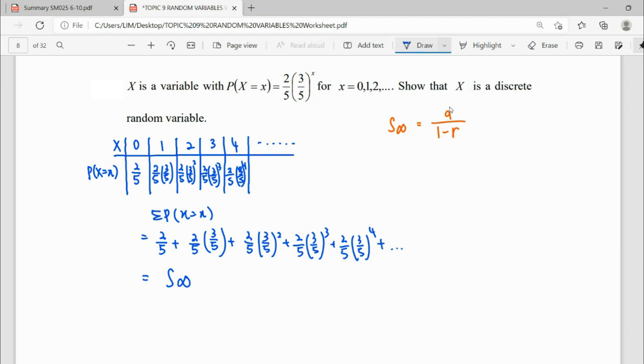In order to calculate sum to infinity, the formula is a over 1 minus r. What's your a? The a will be our first term, so from here we see this pattern of values that we need to sum—our first term is 2 over 5.